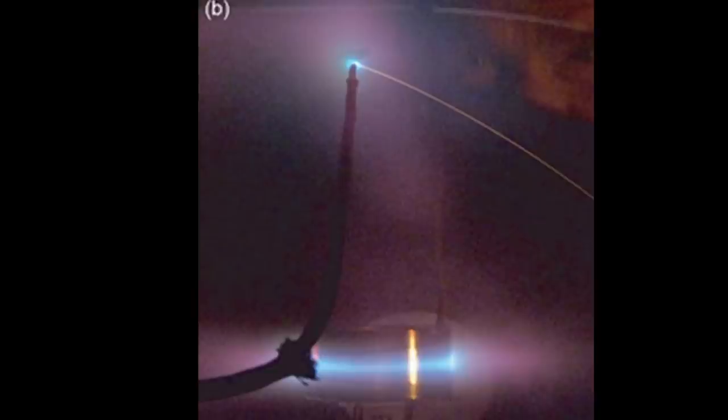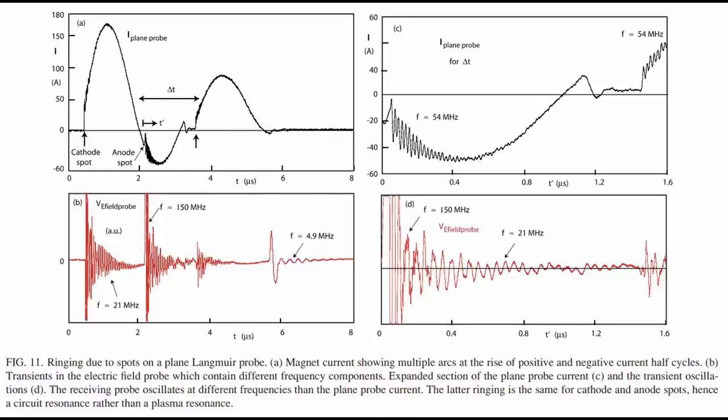The bright streaks you see in the image is due to the sputtered electrode material. The fast rising current of the spot discharges trigger high frequency ringing in the discharge current. Ringing oscillations up to several hundred megahertz have been observed.